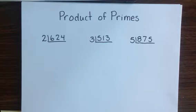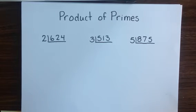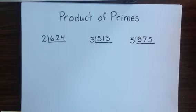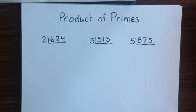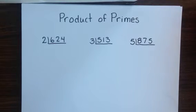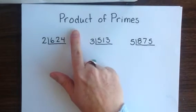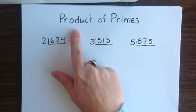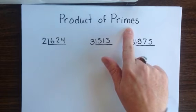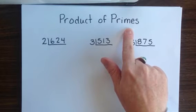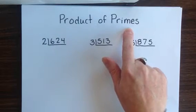This mini-lecture talks about the product of primes, and it's going to rely on information that we have learned in two of our previous mini-lectures: the inverted short division and the divisibility rules. A quick review of these terms: to be a product means the answer that you get to a multiplication problem, and to be prime means that the only numbers that you are divisible by are 1 and yourself.